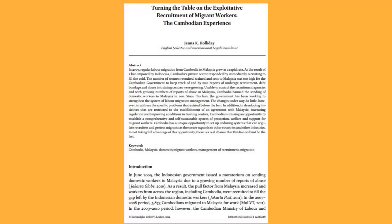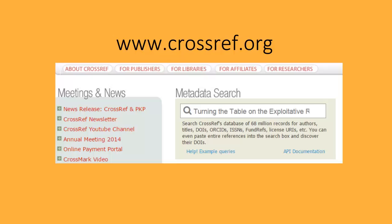Although it's hard to see in this image, the DOI is also usually located on the first page of the PDF of the article, either at the bottom or the top of the page. Finally, you can look up an article's DOI at the website crossref.org.